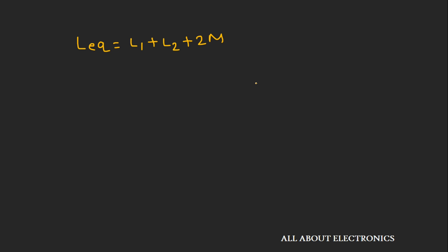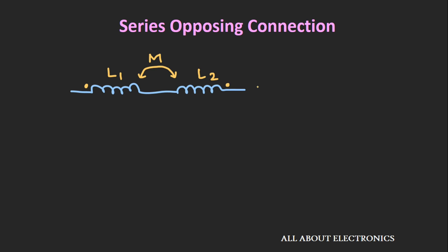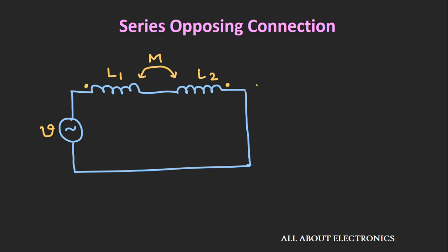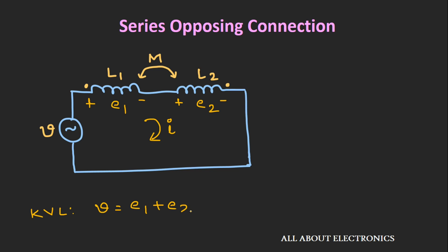Now let's derive the expression for a series-opposing connection. We have two inductors L1 and L2 in series, and applying an AC voltage source V causes current I to flow. E1 is the voltage across the first inductor and E2 across the second. Applying KVL, V equals E1 plus E2. Here, the flux generated in both inductors opposes each other — that is, they are in a series-opposing connection.